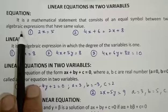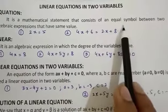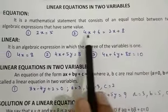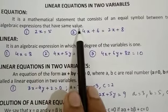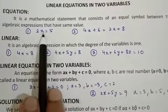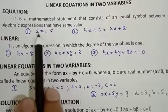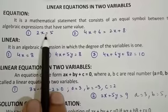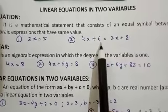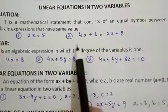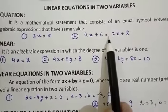The definition is: it is a mathematical statement that consists of an equal symbol between two algebraic expressions that have the same value. If you look at example number one, this is one algebraic expression and this is another algebraic expression, and between these two algebraic expressions there is an equal to sign. In the same way, in example number two, 4x plus 6 is one algebraic expression, 2x plus 8 is another algebraic expression, and between them there is an equal to sign.